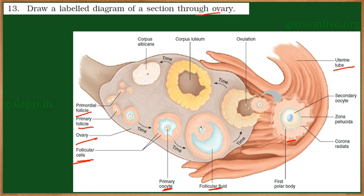The ovary is covered by a layer of epithelial cells and connective tissue, and is supplied with blood vessels. When drawing the structure of an ovary, it is necessary to draw all stages of the follicles.